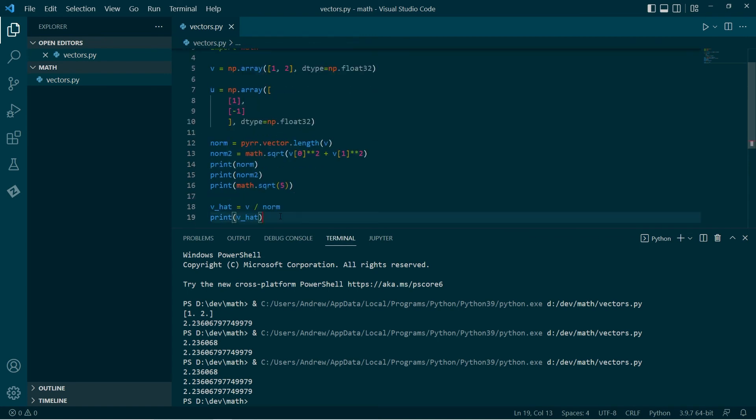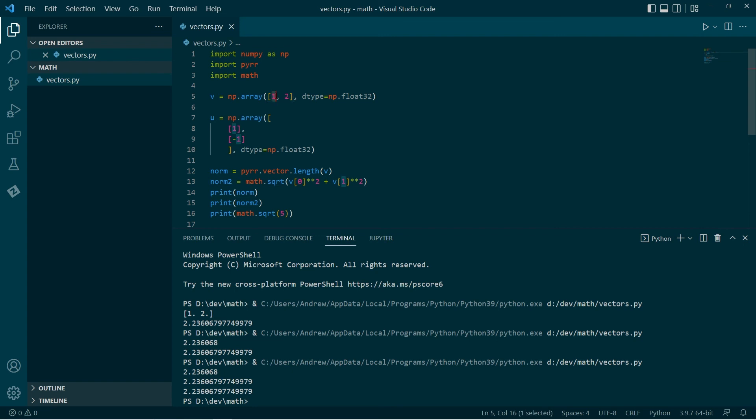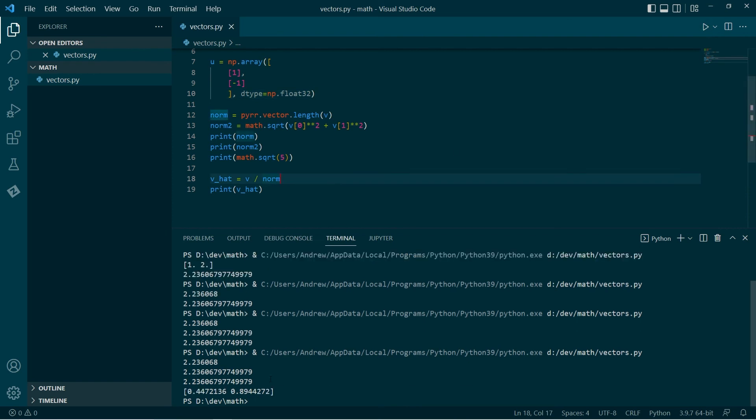So again, I think about it, square root 5 is the norm of this vector. So the elements should be 1 over square root 5, 2 over square root 5. And that looks about right.